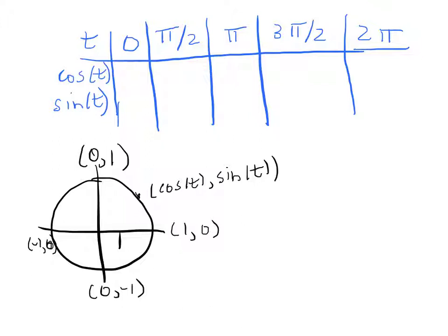Remember from our definition that any point along here which has length t—that length is t, this angle is t—the coordinates of that point are simply (cos t, sin t). Here we are when t = 0, this is the ordered pair. Here at π/2, here's the ordered pair. At π, at 3π/2. Once you understand the definition of cosine and sine, filling in this table is actually quite easy.